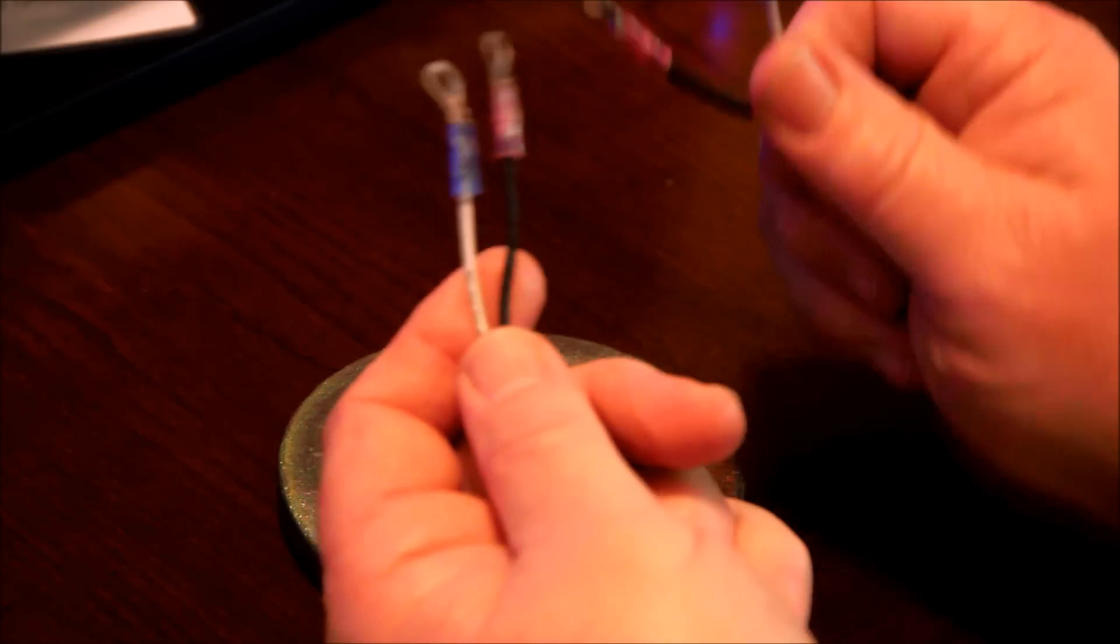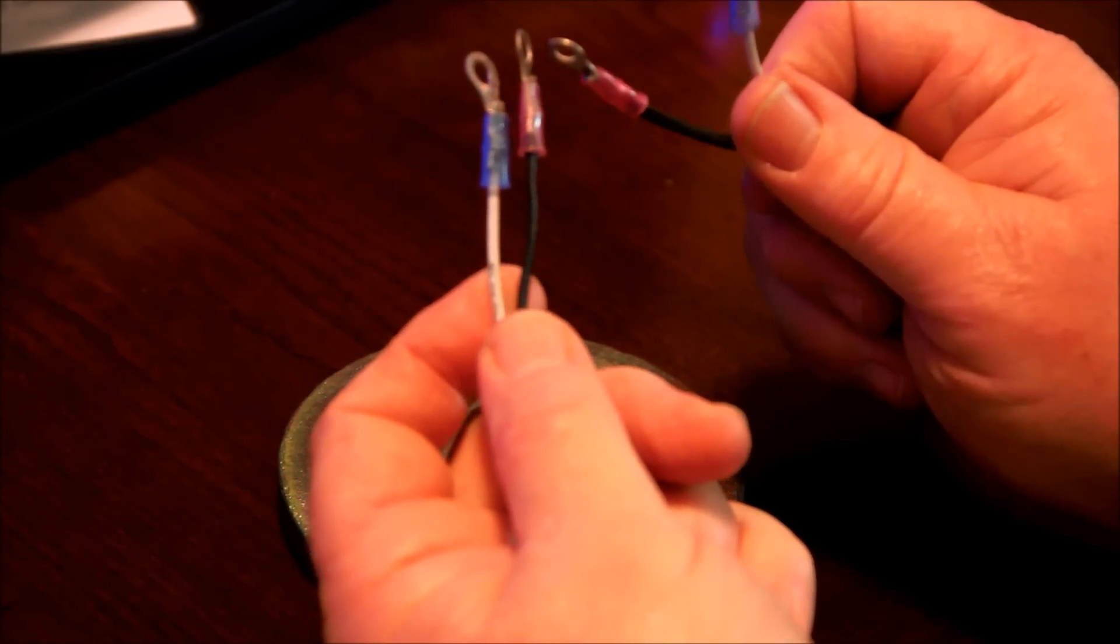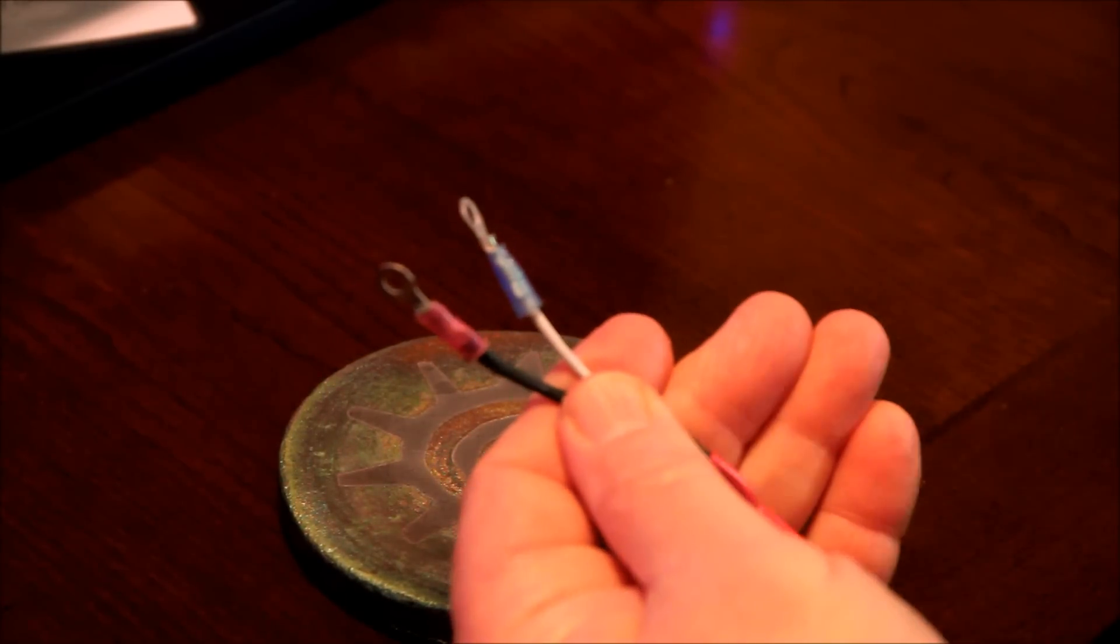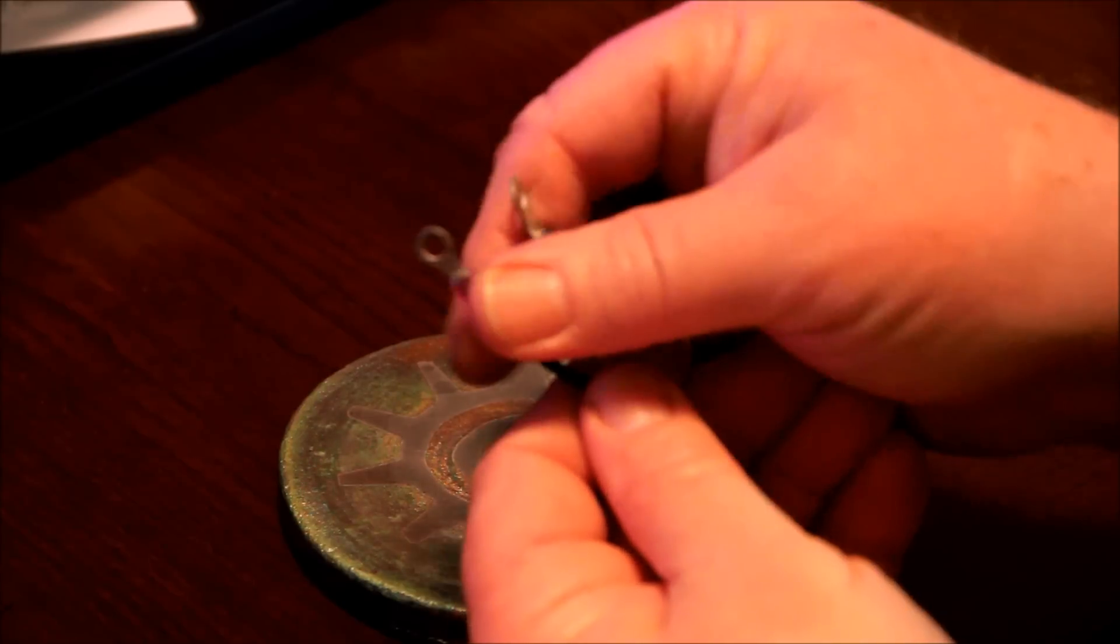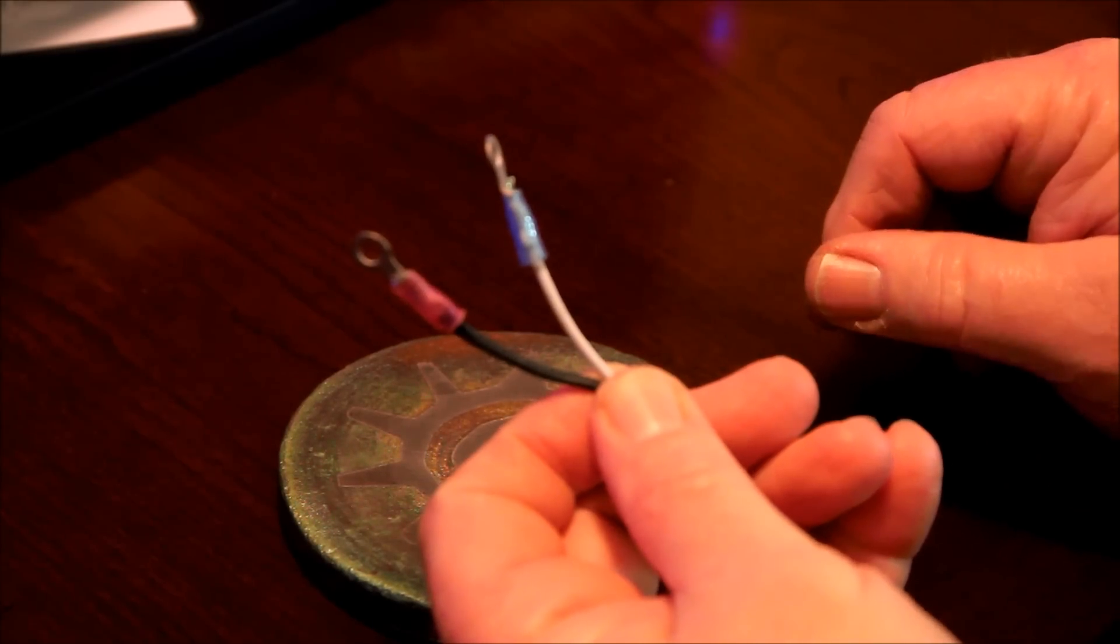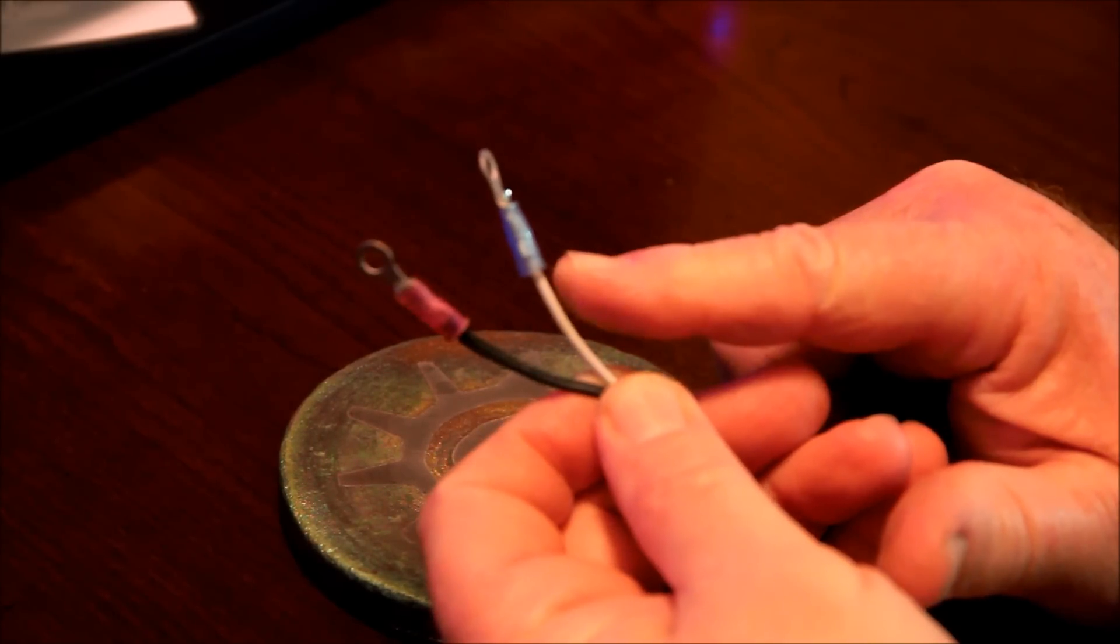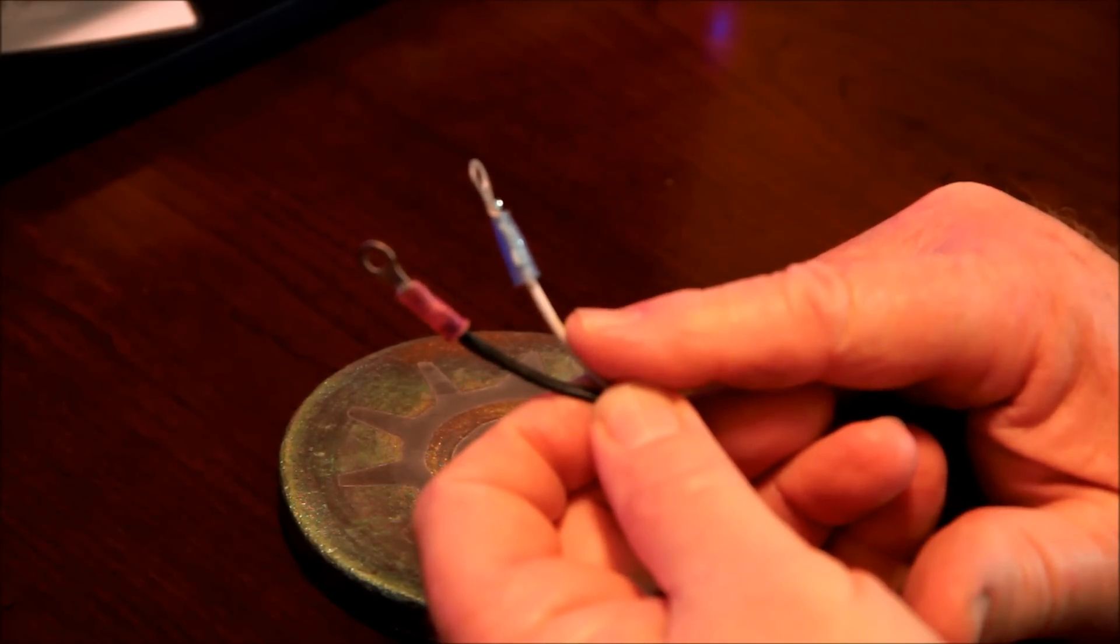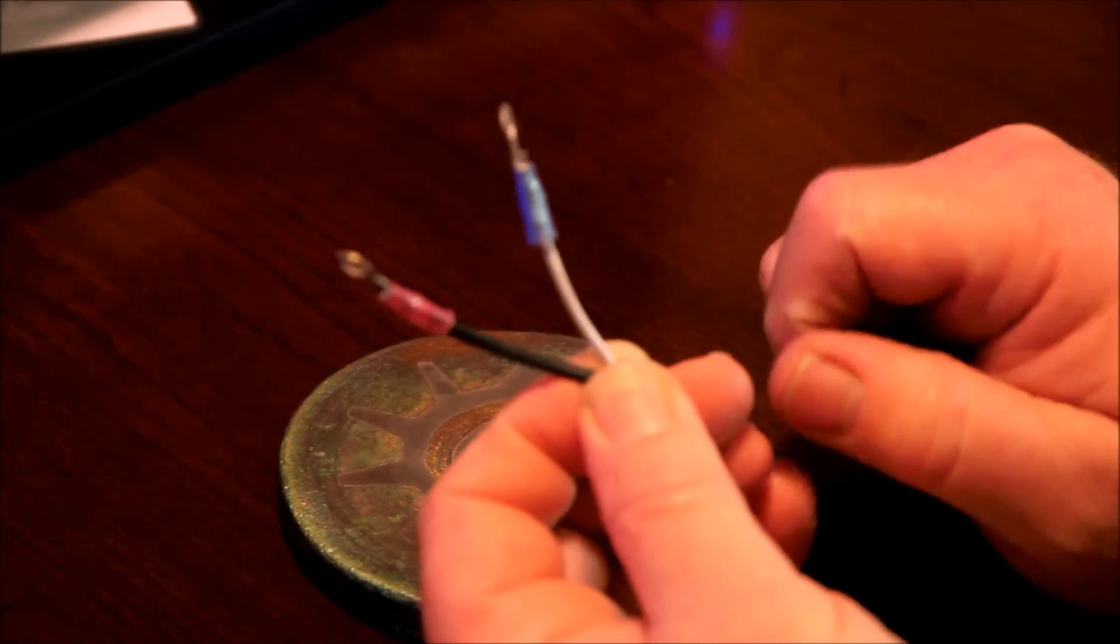So the difference between the three styles is really whether we have ring connectors that attach to the magneto, which this could attach to a slick magneto. Virtually all the slick magnetos are this way, but some Bendix magnetos are also set up to receive this kind of P-lead.